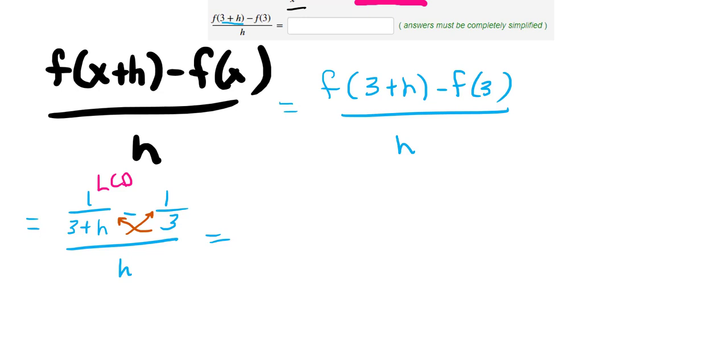But if you don't like that, what you're doing is the same thing: multiply the first term by 3 over 3, which doesn't change it, and multiply the second term by 3 plus h over 3 plus h.